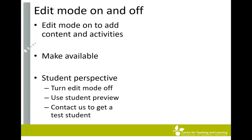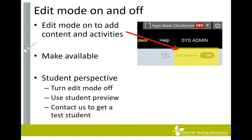Before you start uploading materials to your Blackboard course, make sure that you are in edit mode. Check the upper right-hand corner of the screen — simply click the on/off button to turn edit mode on and off. With edit mode off, you can get an idea of what students see in your course. It's not an entirely accurate picture though, since you can still see and access the control panel below the course menu, which a real student cannot.